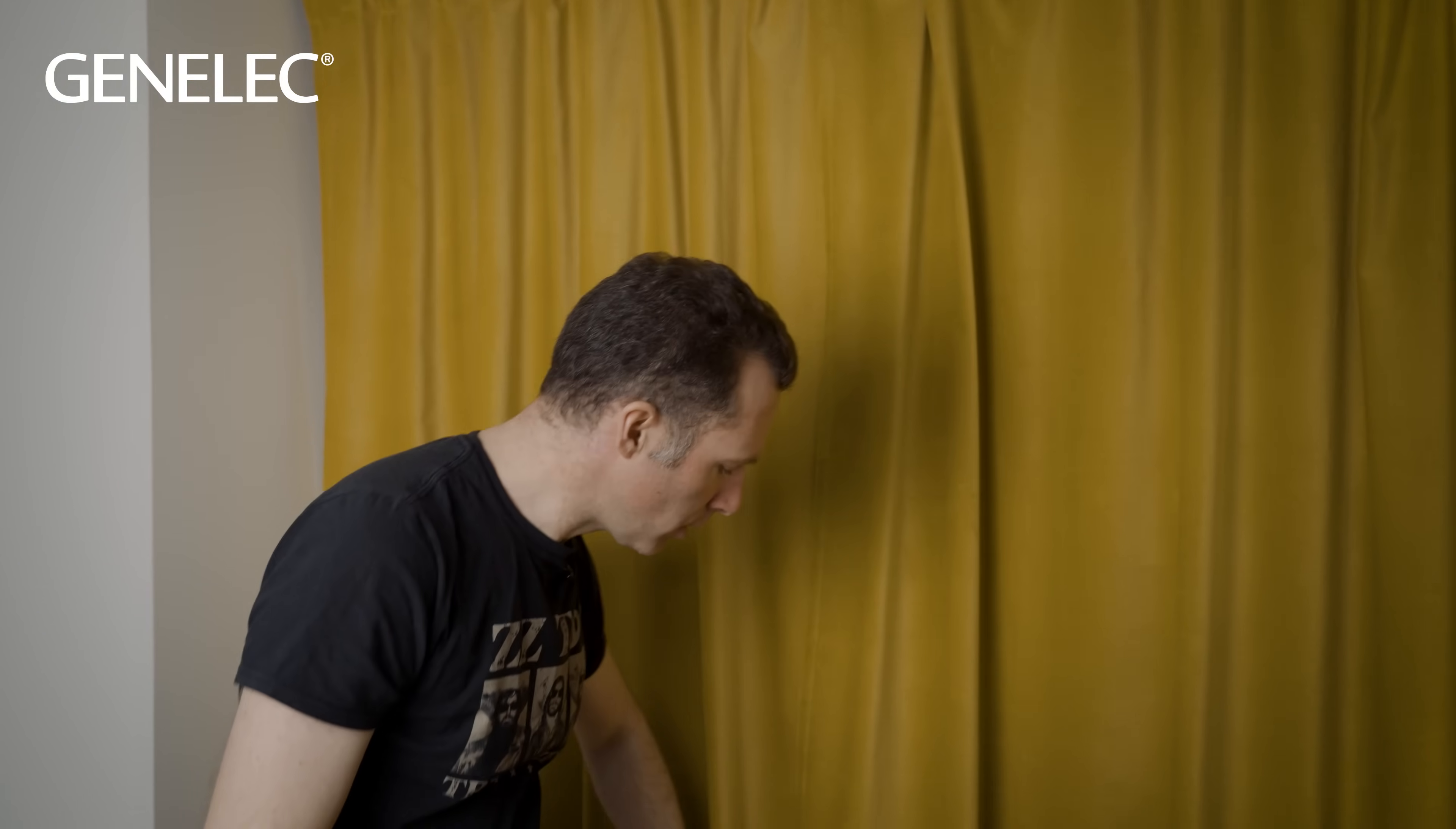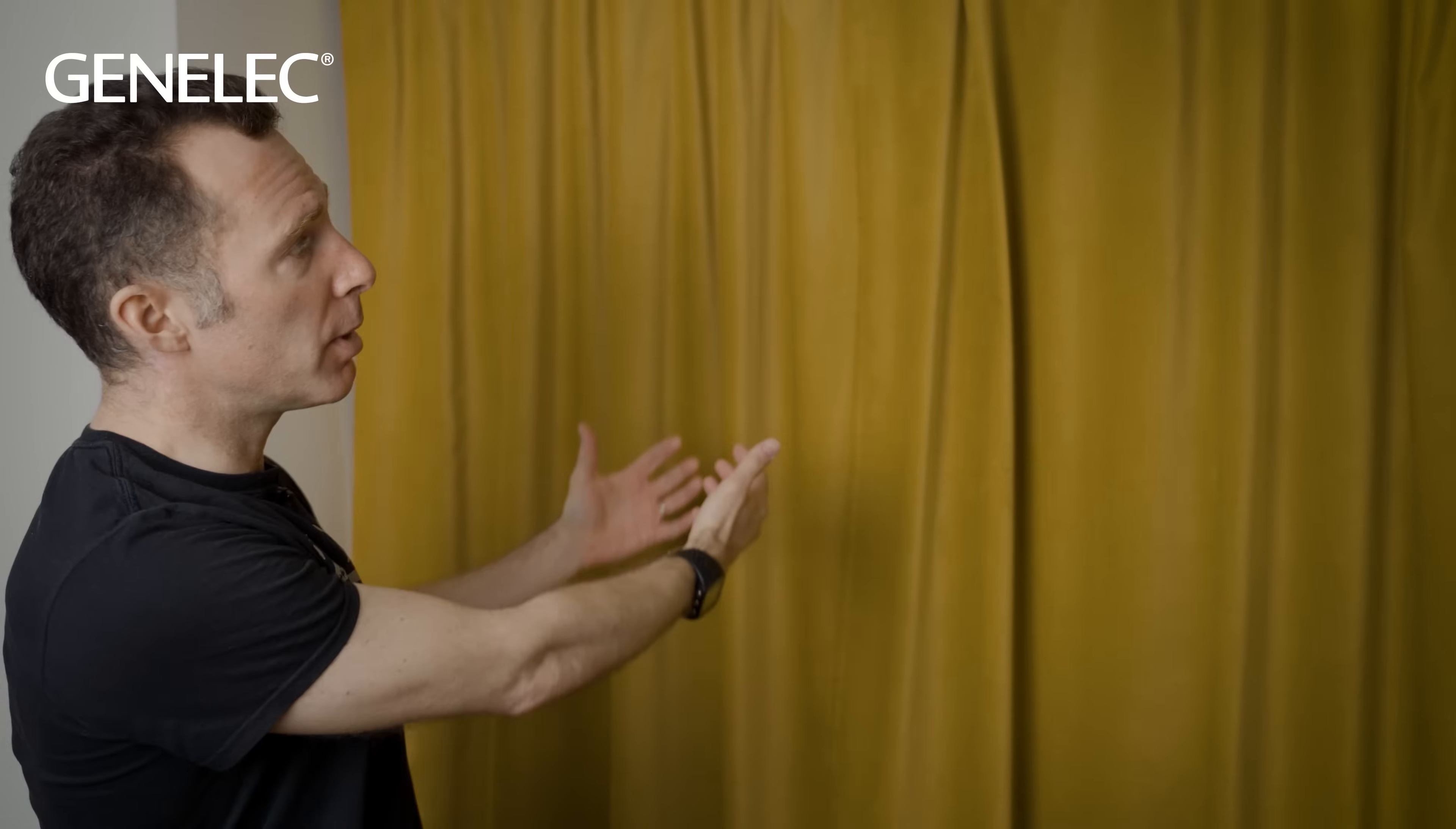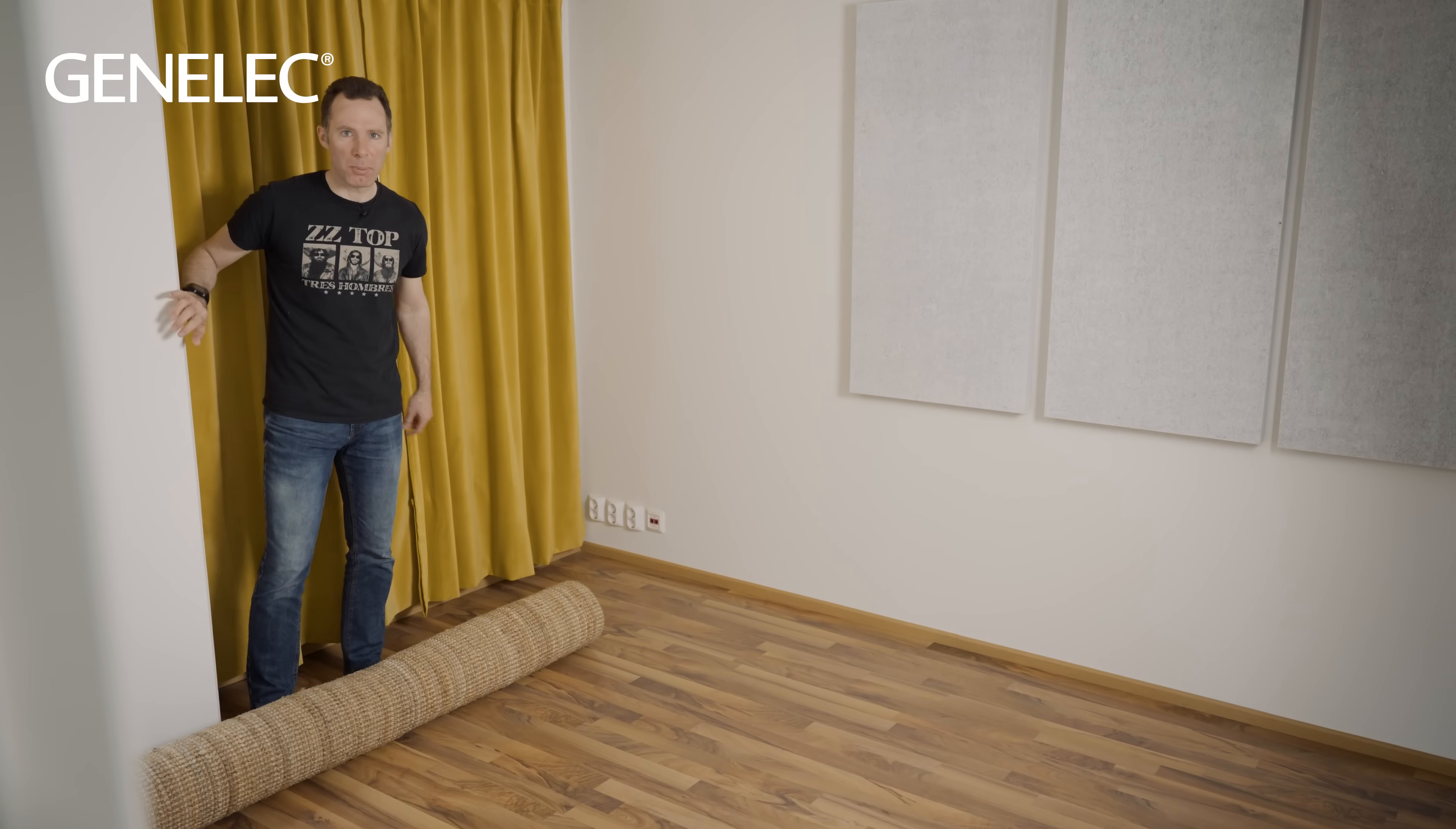So we ordered the curtains a bit wider than we need for the window, just so that they can hang loosely in these nice folds. So that brings the curtain a little bit away from the window and away from the concrete wall, more into the room so it's more effective at absorbing. So that's another step forward, which is really, really great. Now the only untreated surface in the room is the floor. So it's carpet time.